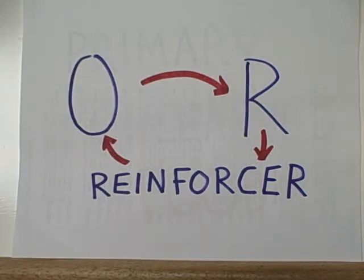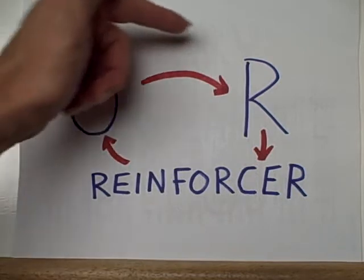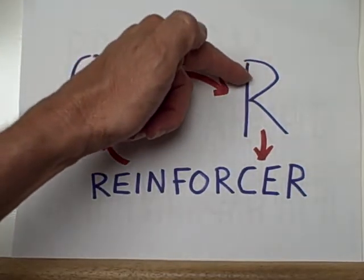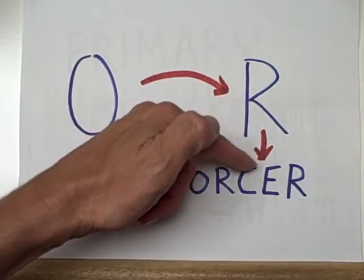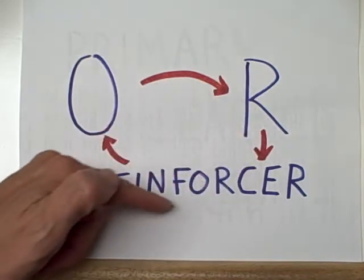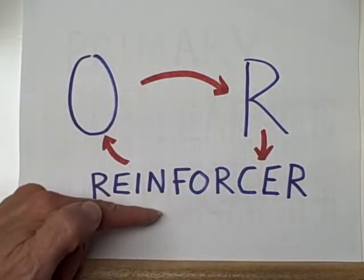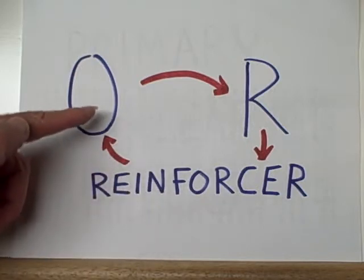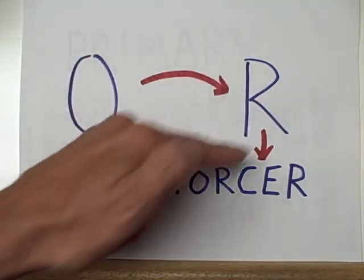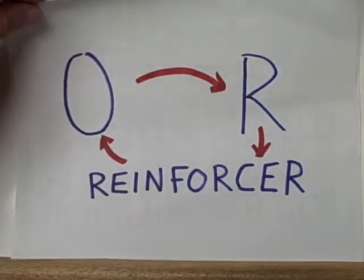The diagram would look something like this. An active organism emits a response. That response somehow leads to the provision of a reinforcing stimulus, and that reinforcing stimulus makes the organism more likely to respond that way in the future.